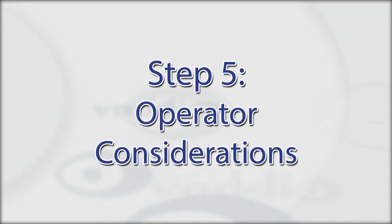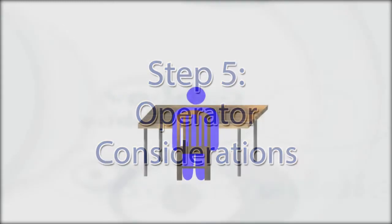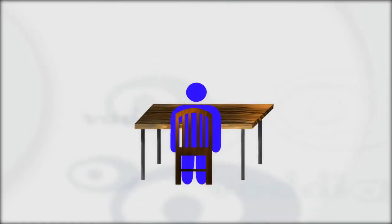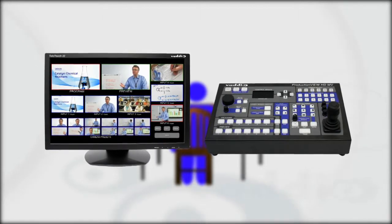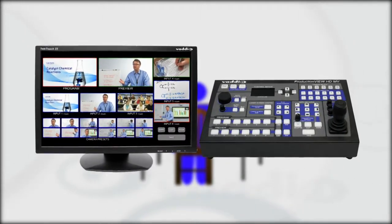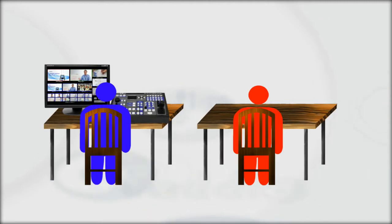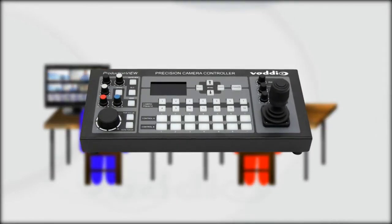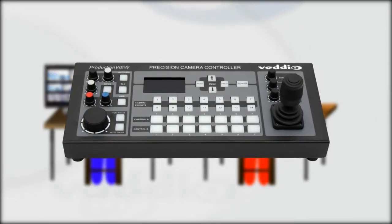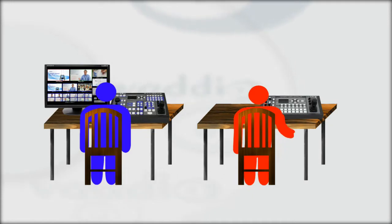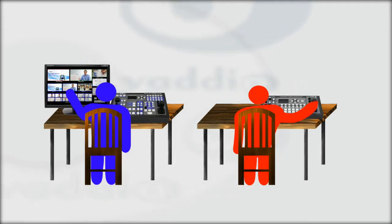When controlling PTZ cameras, you need to determine if the application has a multi-person control room or a one-person control room. If a single person will be operating the equipment, then a camera controller with an integrated video switcher such as the ProductionVue HD-MV with TeleTouch monitors is a great option. If there are multiple people operating the equipment in the control room area, then a standalone camera controller such as the Precision Camera Controller is the best option. This allows one person to focus on all the cameras and camera shots while the director can switch the video sources and perform other tasks.